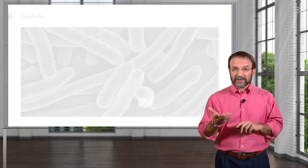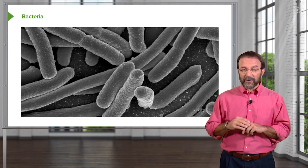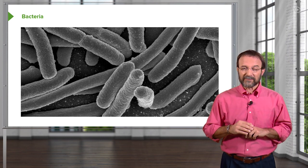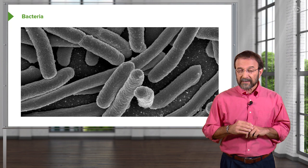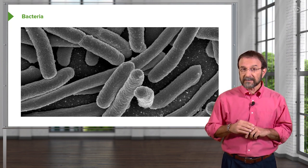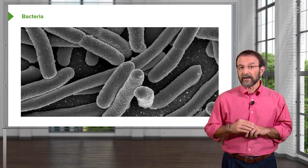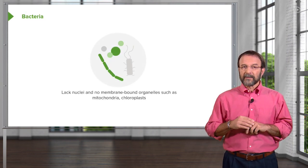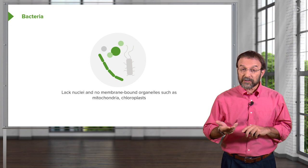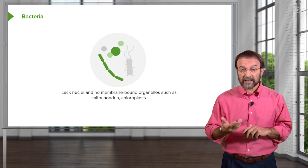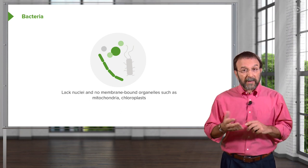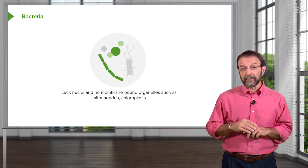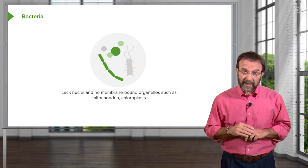Let's start with a little review of what we know about bacteria. Here's an electron micrograph of a common bacterium from your intestine, E. coli. These are rod-shaped cells and they're magnified about a hundred thousand times. Bacteria, in contrast to the eukaryotic cells that make us up, have no nuclei and no membrane-bound organelles like mitochondria or chloroplasts.